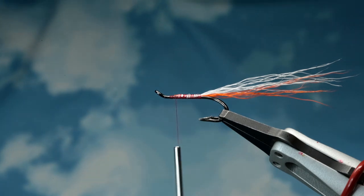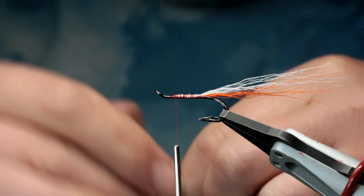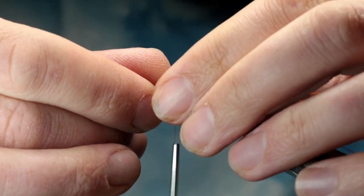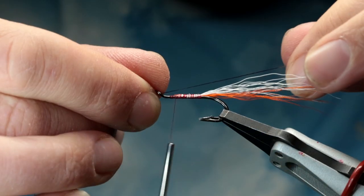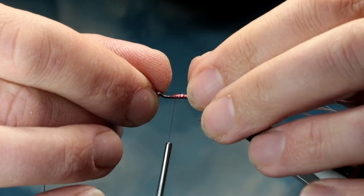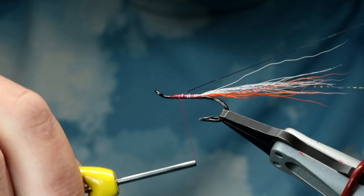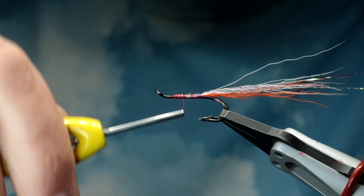Right, so the next thing I'm going to tie in is a bit of flat tinsel. So I'm going to put the length of the tail, put the other one just around that side there.